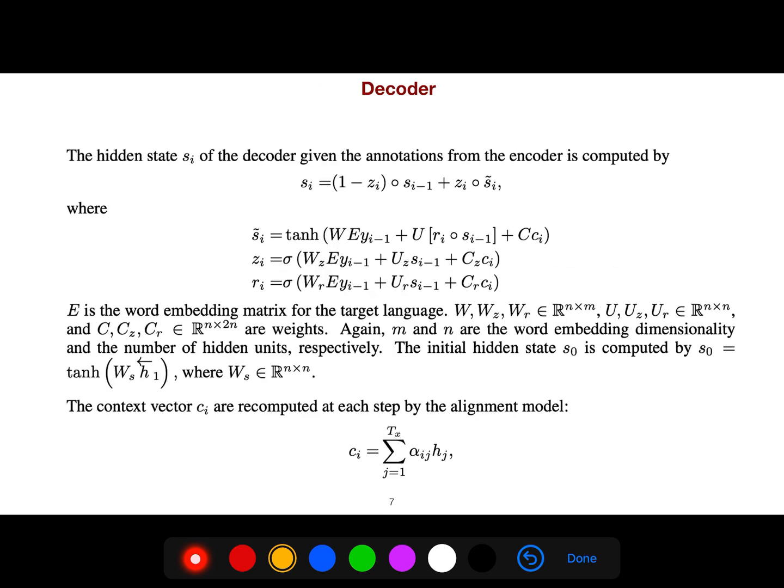And for the decoder, we have initial state s0 is computed by this one. And the context is always like this. The context is important. It is a linear combination of your hidden states of the encoder.